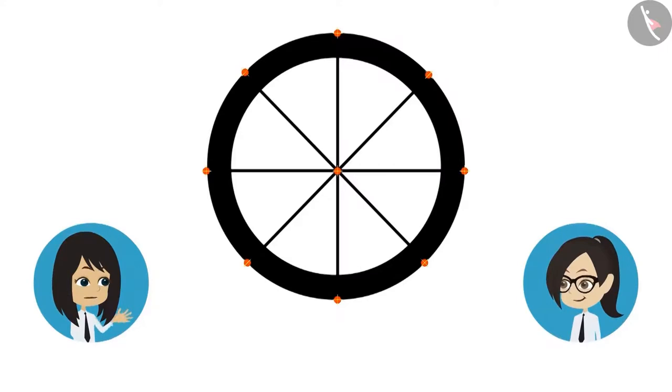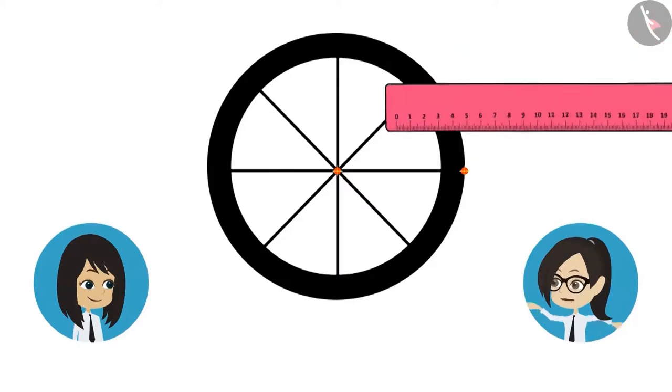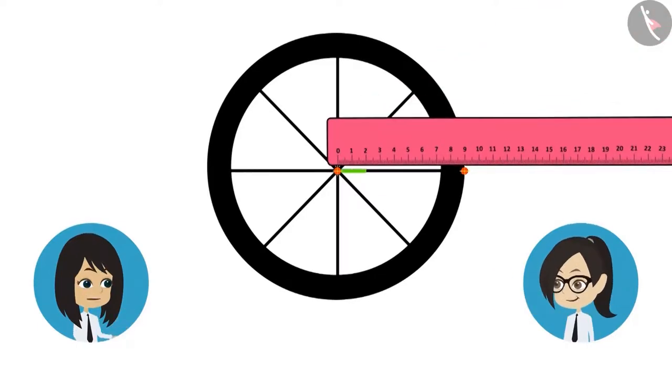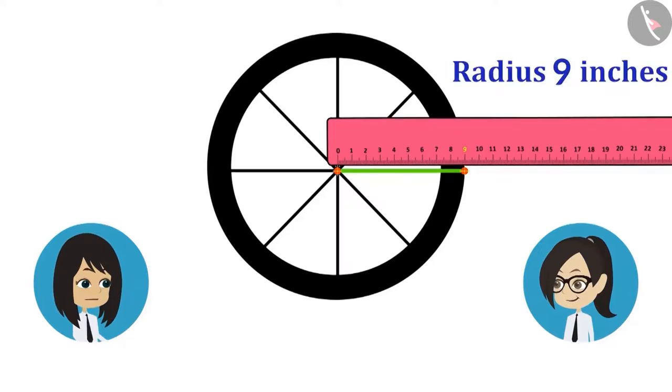Right. Let's measure up to this point. Okay. Now let's measure the distance between these two points using a scale. Radius of the wheel of bicycle is 9 inches. Let's now measure its diameter as well.